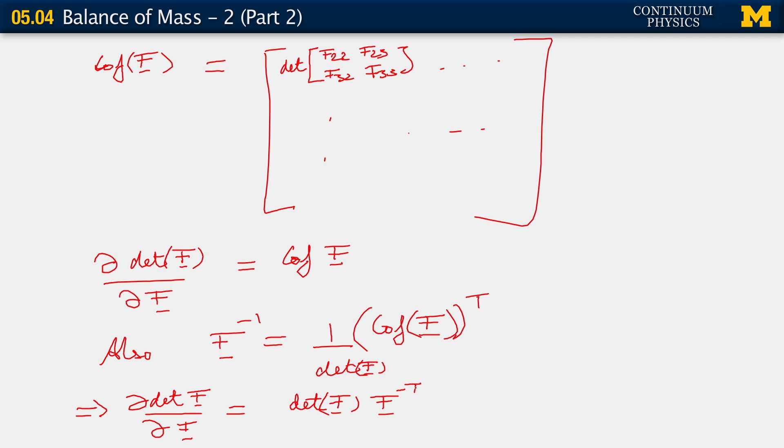So, remember where this all came from. All of this came from the fact that we were saying we need to calculate the following quantity. J dot is derivative of this determinant function, because j is in fact determinant of f, derivative of this with respect to f contracted with f dot.